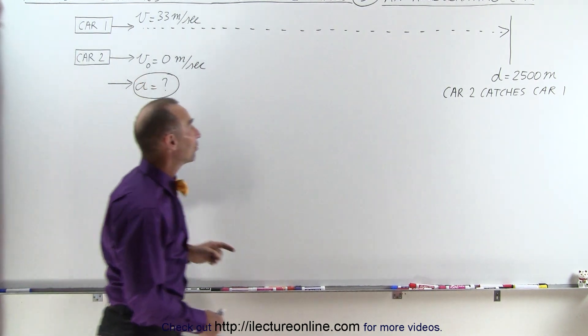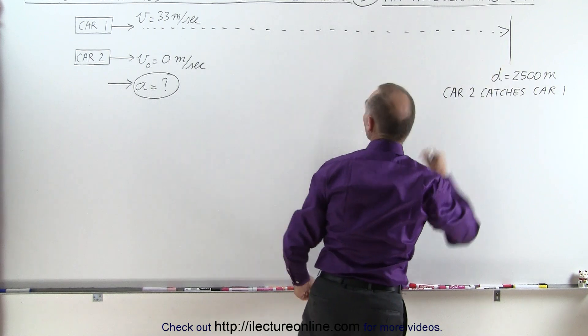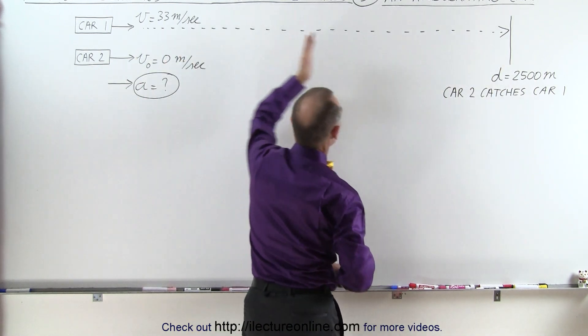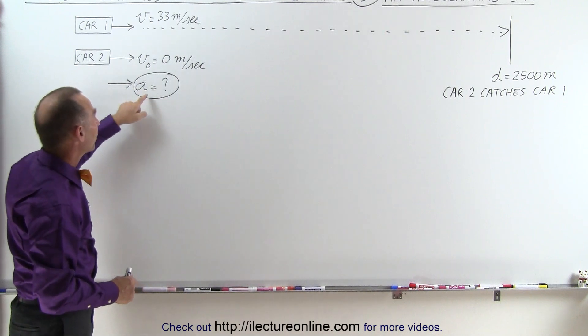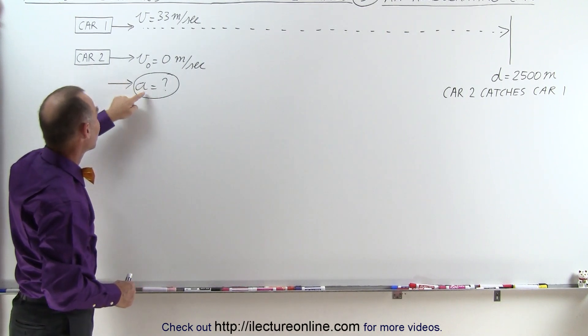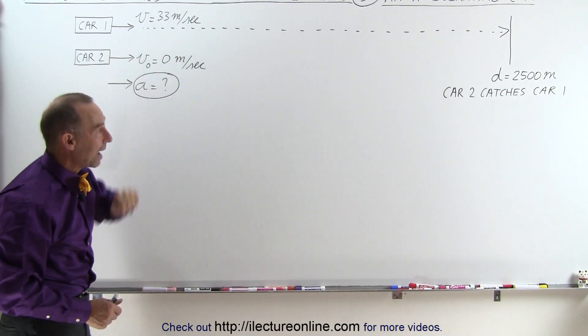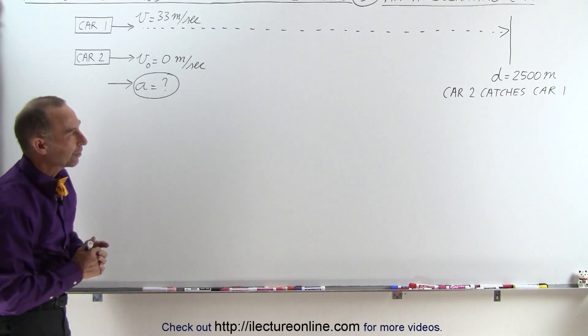By the time the first car reaches a distance of 2,500 meters, the second car will have caught the first car. The question is, what is the acceleration necessary for the second car in order to catch the first car after 2,500 meters?